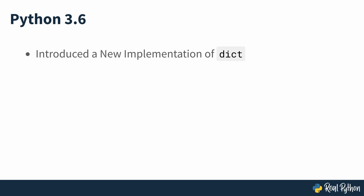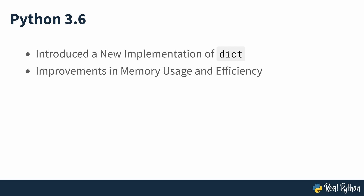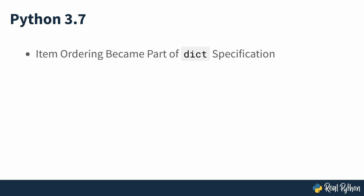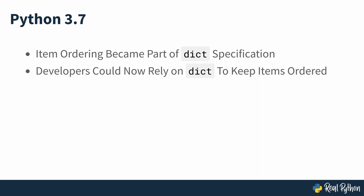Python 3.6 introduced a new implementation of dictionaries. This represents a big win in terms of memory usage and iteration efficiency. Additionally, the new implementation provides a new and somewhat unexpected feature: dictionary objects now keep their items in the same order they were introduced. Initially, this feature was considered an implementation detail and the documentation advised against relying on it. In Python 3.7, the item's ordered feature of Dict objects was declared an official part of the Python language specification. So from that point on, developers could rely on Dict if they needed a dictionary that keeps its items ordered.